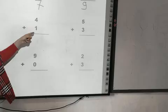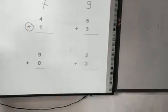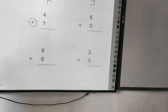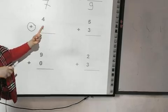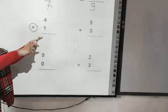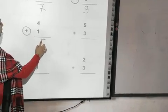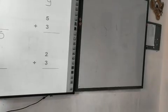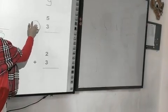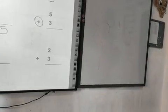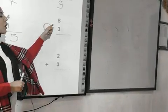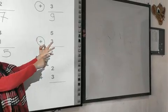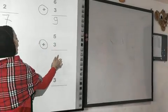Here, 4 plus 1. Make a circle around plus. Where is the greatest number — 4 or 1? Four. I will put 4 in my mind and 1 on my finger. What comes after 4? Five. So I will write 5. Here, 5 plus 3. At first, make a circle around plus to make sure it's a plus. Where is the greatest number? Five. So 5 in my mind and 3 on my finger. After 5: six, seven, eight. So I will write 8.